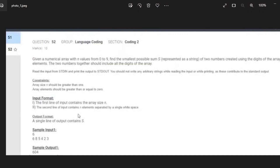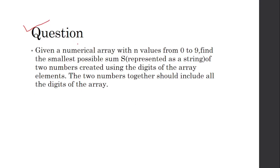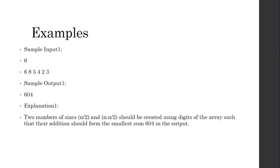As you can see, this is our question. As I've mentioned in my previous videos, I can't write anything in the pictures, so I write the same question in my slides. Our question: given a numerical array with n values from 0 to 9, find the smallest possible sum represented as a string of two numbers created using the digits of the array elements.